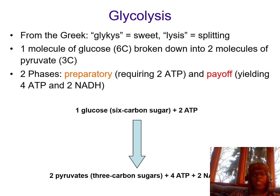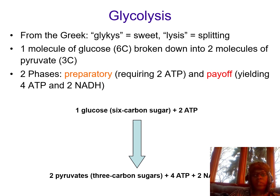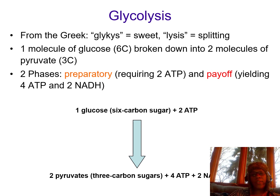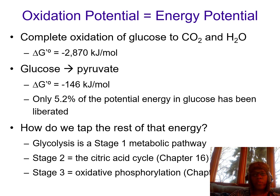Now to learn about glycolysis. Glycolysis comes from the Greek word glykis, which means sweet, and lysis, which means splitting. So we're splitting up or breaking down a sweet molecule, glucose. We start with one molecule of glucose, which has six carbons, and eventually it is broken down into two molecules of pyruvate, which each have three carbons. It happens in two phases. First, the preparatory phase requires two molecules of ATP — we're putting in energy in the first five steps. Then in the payoff phase, we end up with four molecules of ATP and two molecules of NADH. So for our net equation of energy, we actually only yield two molecules of ATP and two molecules of NADH.